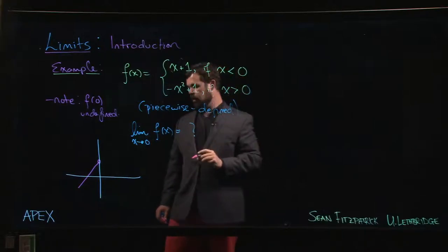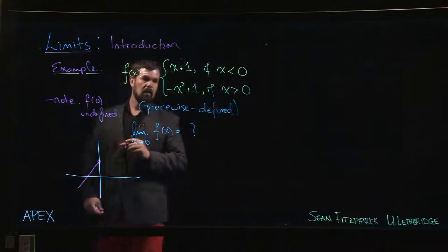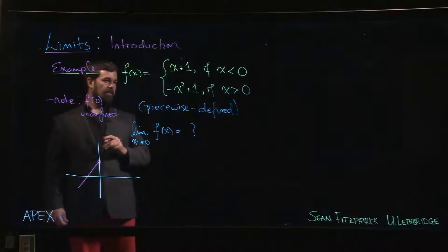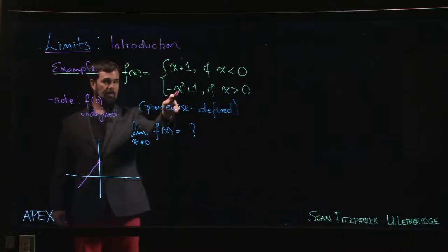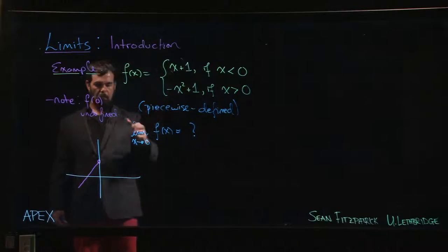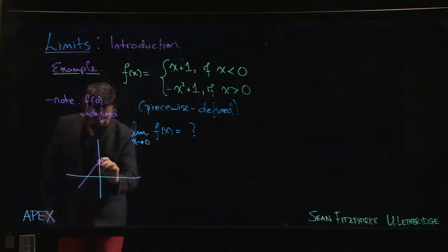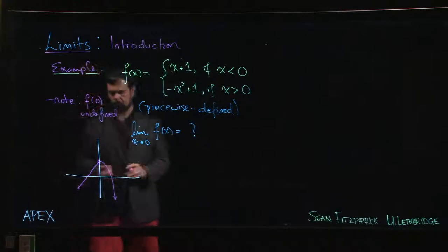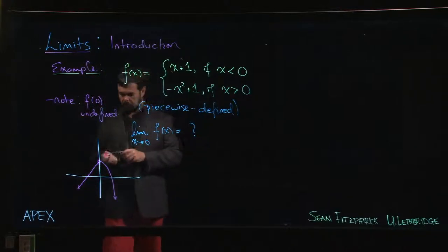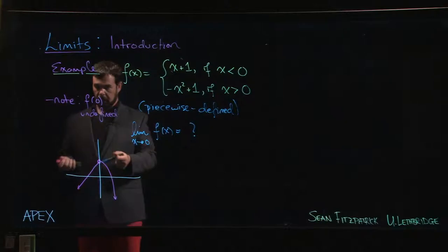Now if x is bigger than 0, then we have a quadratic. We got a parabola opening downward, shifted up one unit, and we get something that looks like that.